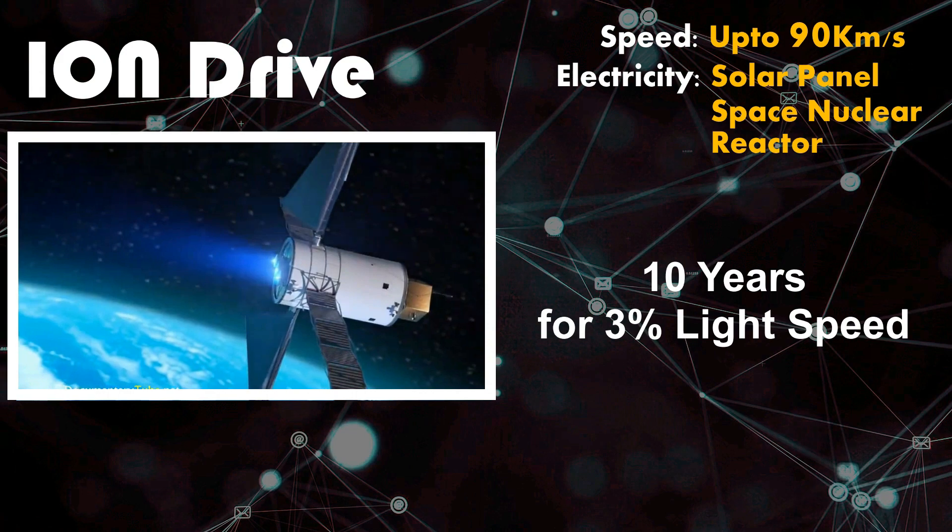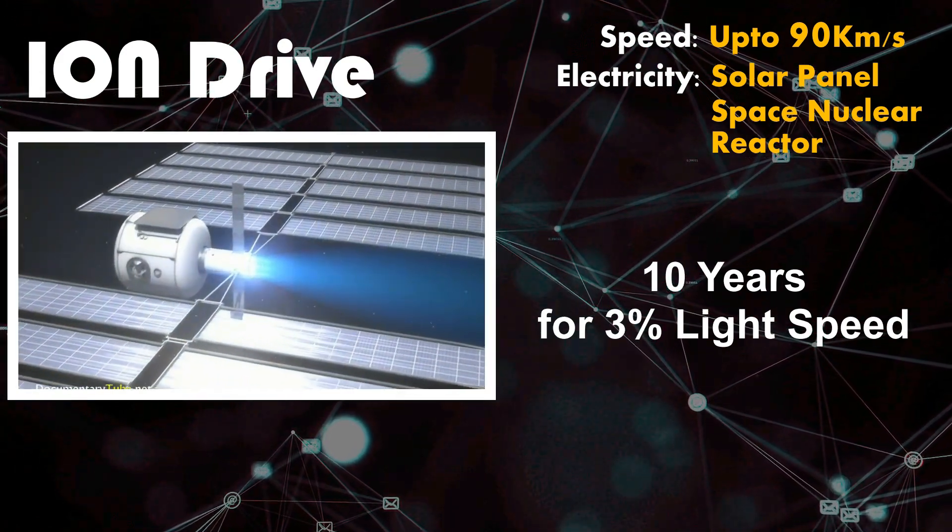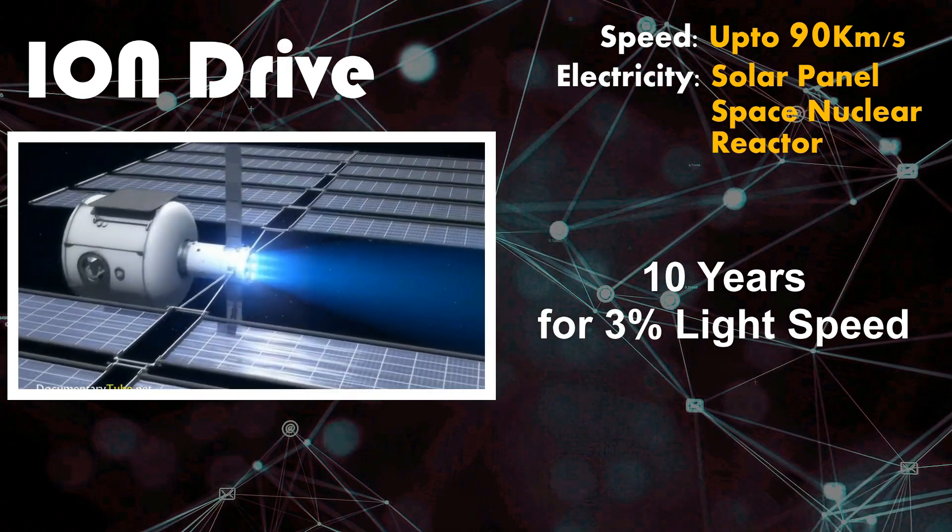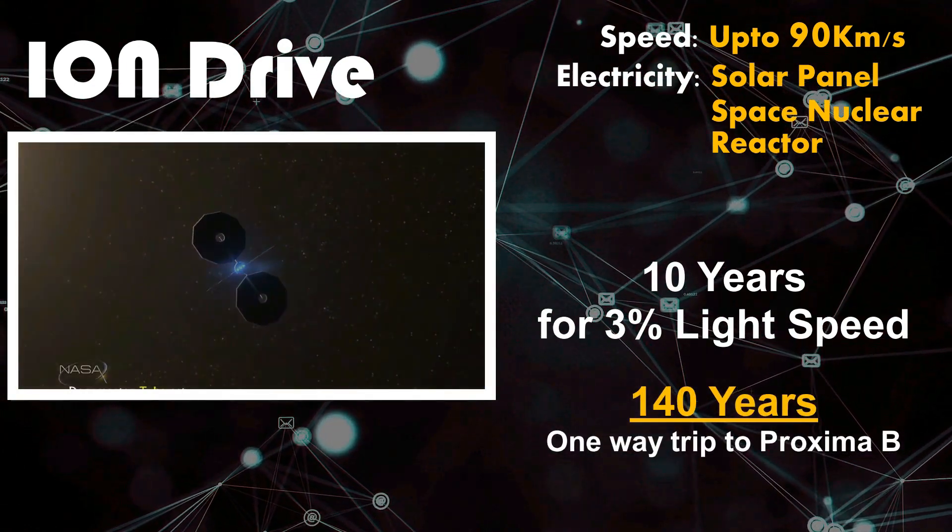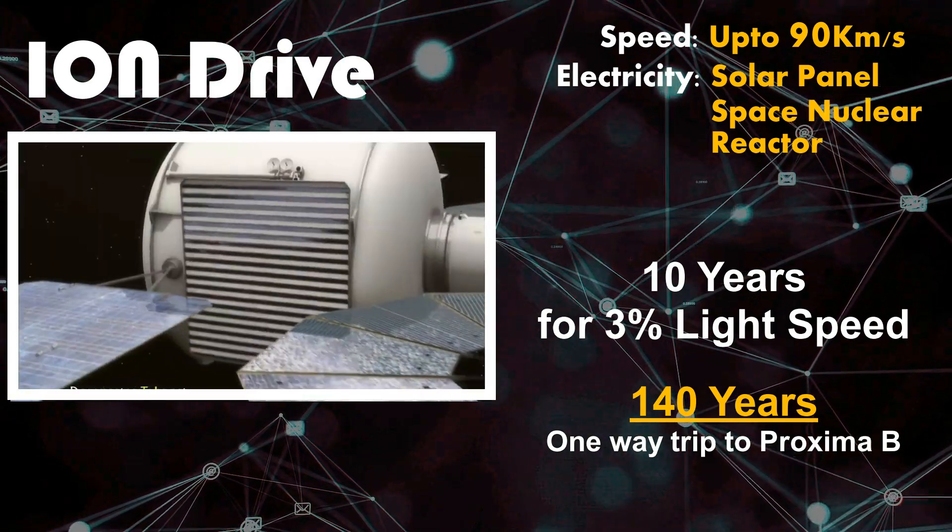It would take around 10 years for an unmanned spacecraft to reach 3% light speed. A one-way trip to Proxima B can take up to 140 years with ion drive. Improvements in the design of ion thrusters could reduce the travel time, but not to that of an average human lifespan.